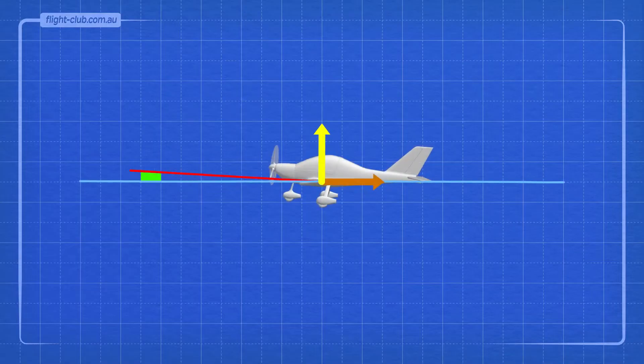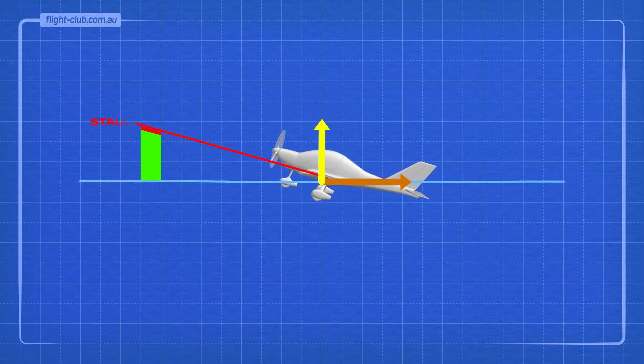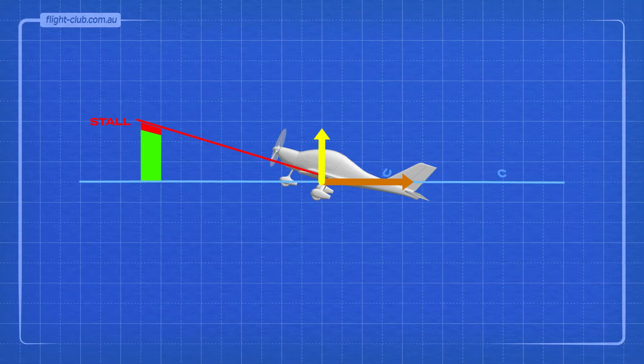Every spin starts with a stall. Every aeroplane will enter a stall when its angle of attack is increased beyond the critical angle of attack. At the critical angle of attack, the boundary layer of airflow separates from the wings, causing a loss of lift and more drag.